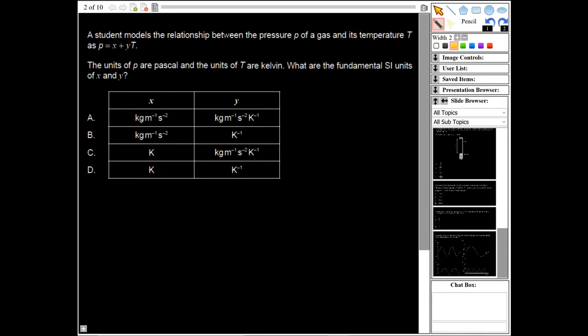Okay, moving on to question two. The student models the relationship between the pressure p of a gas and its temperature T as p equals x plus yT. The units of p are the pascal and the units of T are the kelvin. What are the fundamental SI units of x and y?